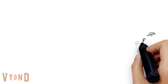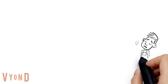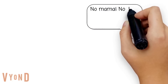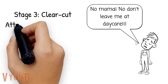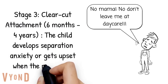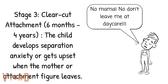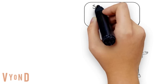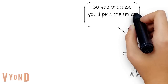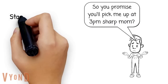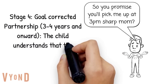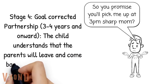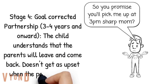Stage three is clear-cut attachment, which usually occurs between six months and four years. The child develops separation anxiety and gets visibly upset when the mother or attachment figure leaves. The fourth and final stage is called a goal-corrected partnership, lasting from three to four years and onward, where the child understands that parents will leave and come back and so does not get as upset when they leave.